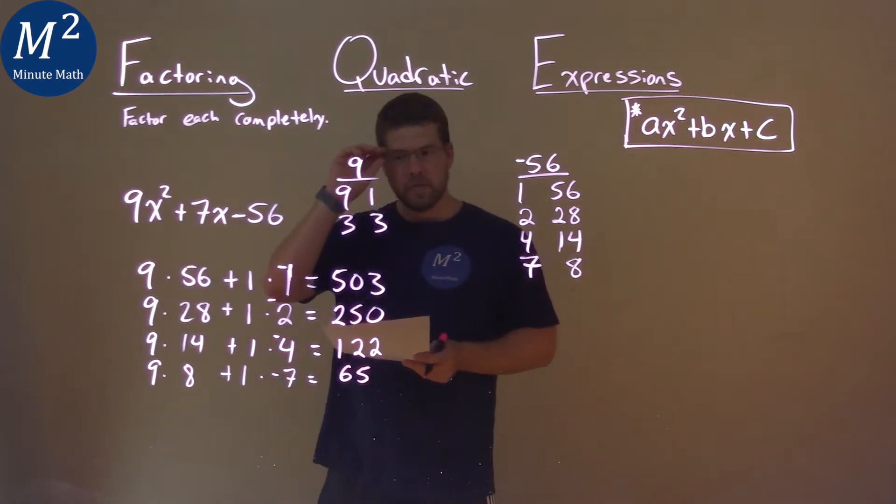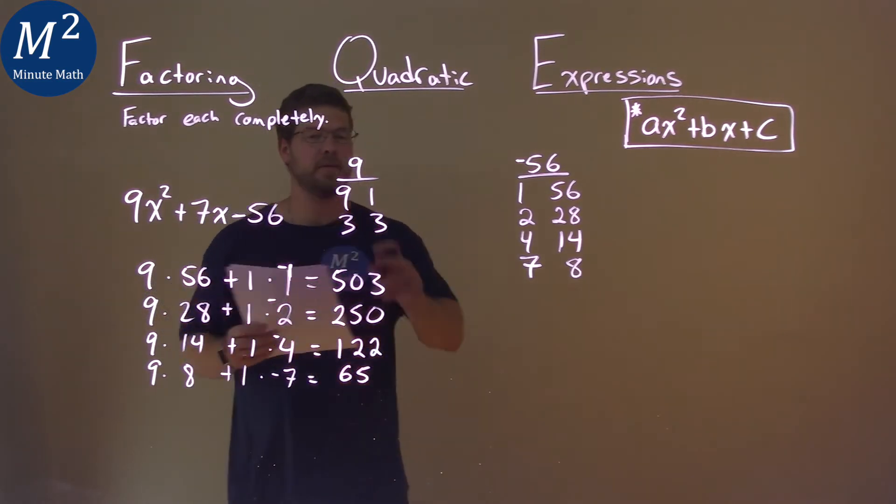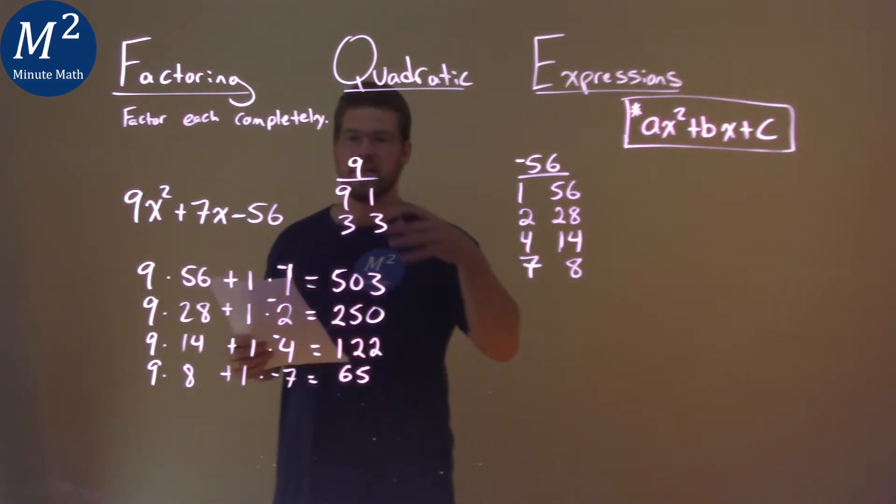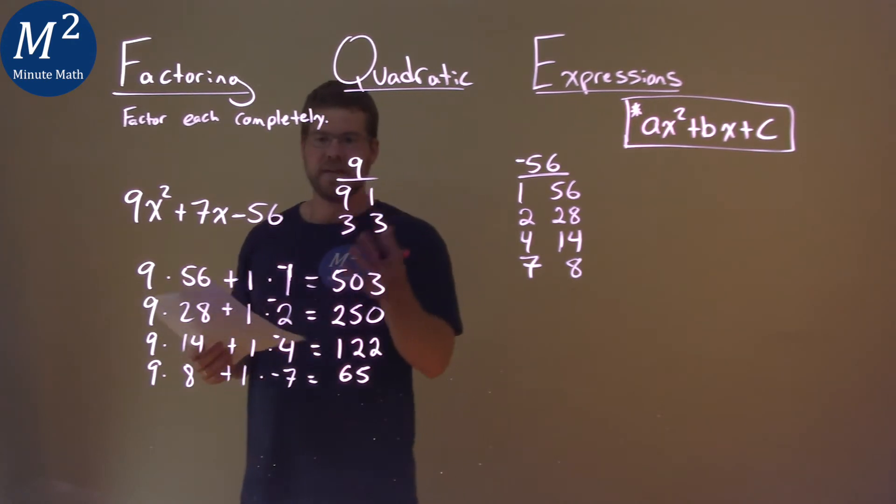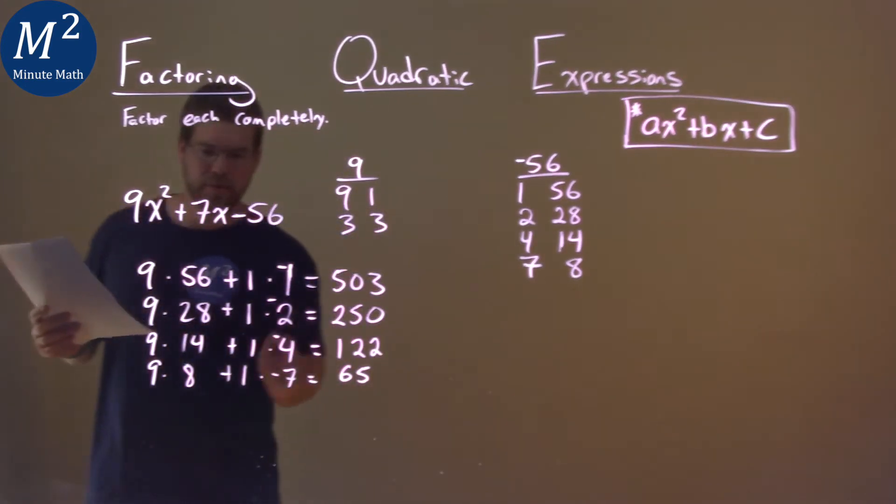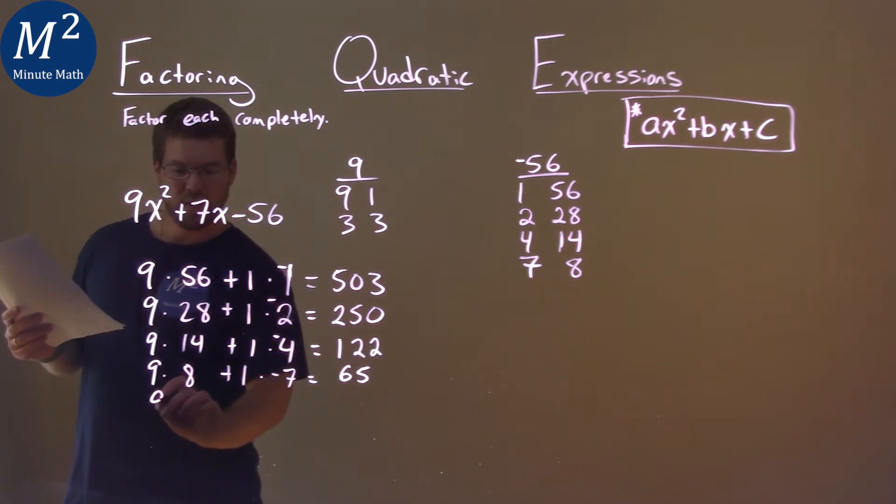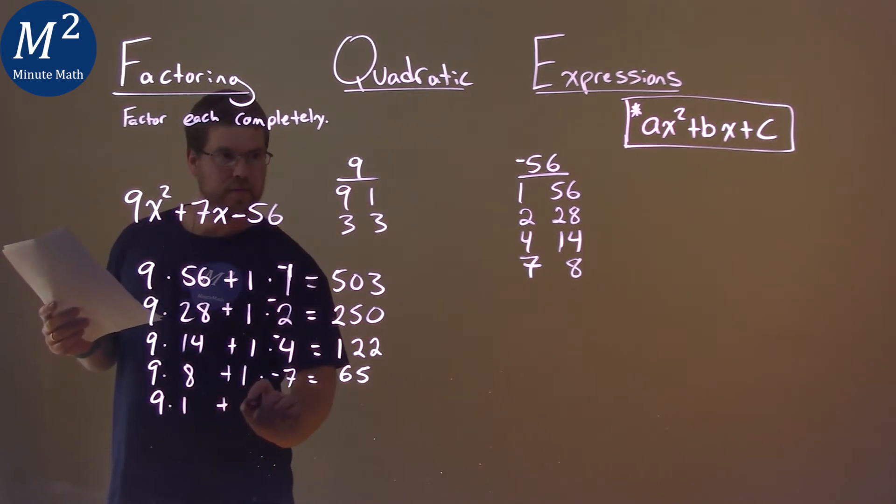Now, of course, what I could also do is flip it around and do the 9 times the 1 and then 1 times 56 and then do the same process and go through and see which one of that being negative will work. I can show you the setup here. We have 9 times the 1 plus 1 times the 56.